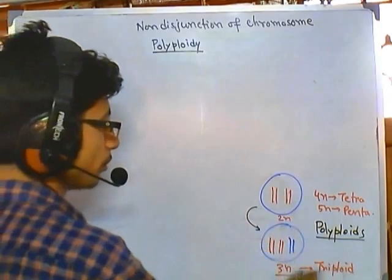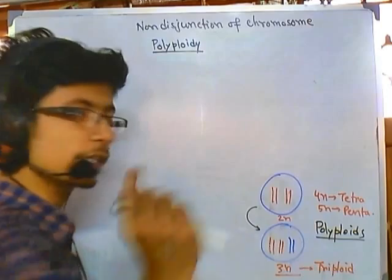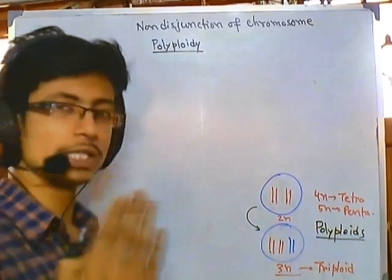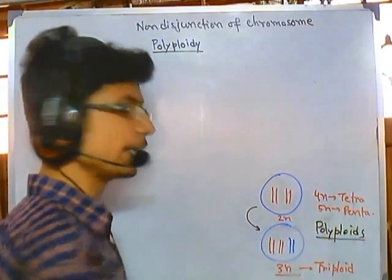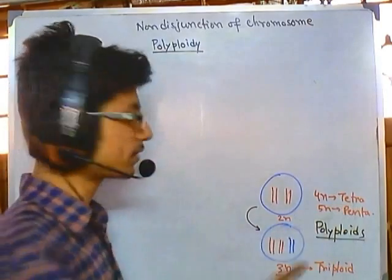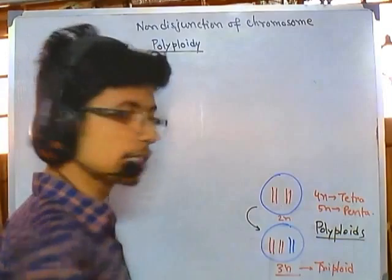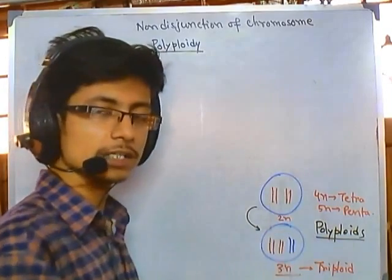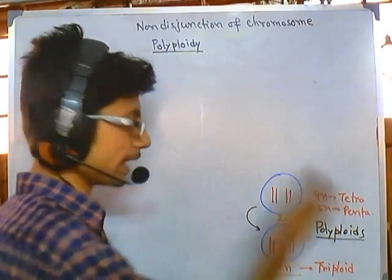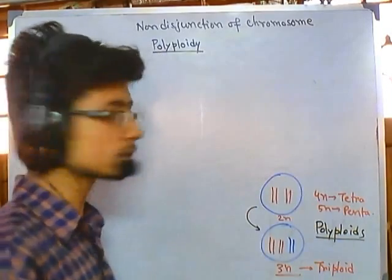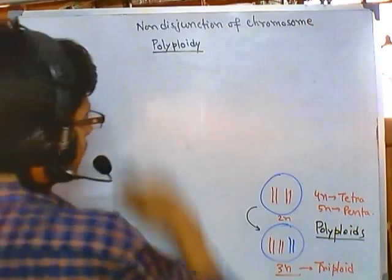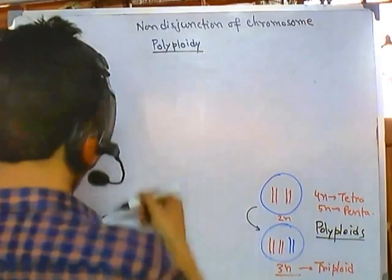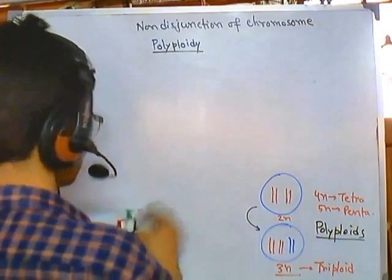Polyploidy can take different forms. Going from 2n to 3n is called triploid because three sets of chromosomes are present. If there are four sets it is called tetraploid, five sets is pentaploid, six sets is hexaploid, and so on. Polyploidy can be divided into two different types.